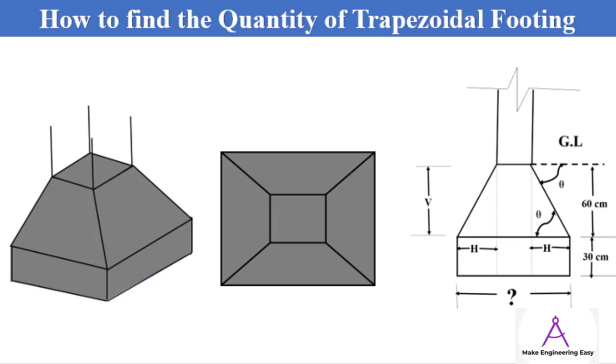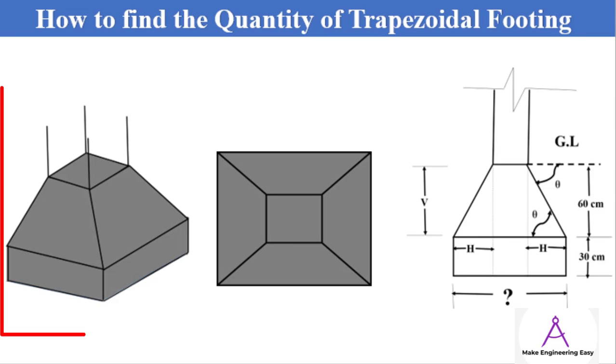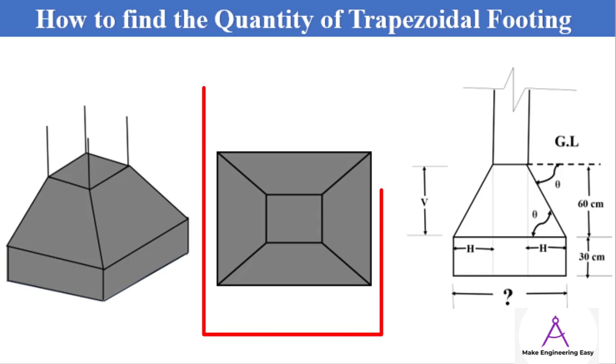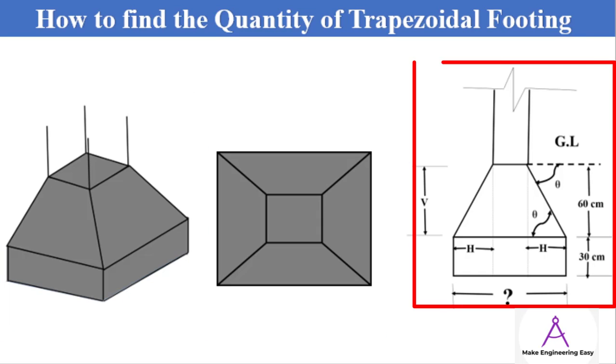This is the first numerical example from the course book Advanced Quantity Survey Diploma in Associated Engineering and Civil Technology. The 3D view, top view, and section or elevation of the trapezoidal footing as shown. Let's come to the numerical example.